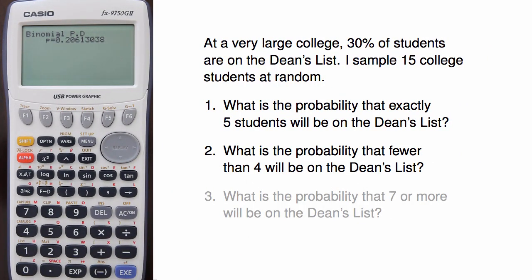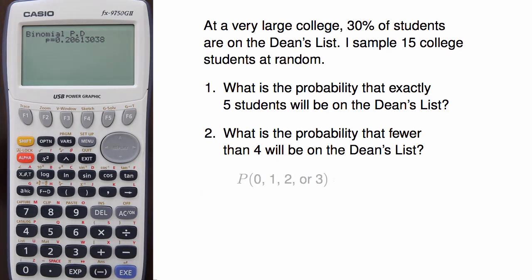The second question is, what is the probability that fewer than 4 of the 15 students will be on the Dean's List? That is, it can be either 0, 1, 2, or 3 students.